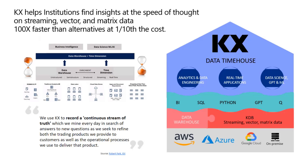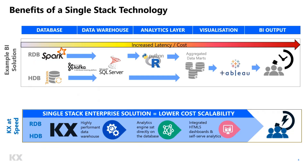At the very top of the slide, you'll see the headline: how KX helps institutions find insights at the speed of thought on streaming vector and matrix data, 100 times faster than alternatives at one-tenth of the cost. What does that actually mean? You can complete many more queries with the same size of application, or you can actually condense down the size of your application. One of the most common issues I see is that clients are building solutions on varieties of different technologies and struggle to scale those over time.